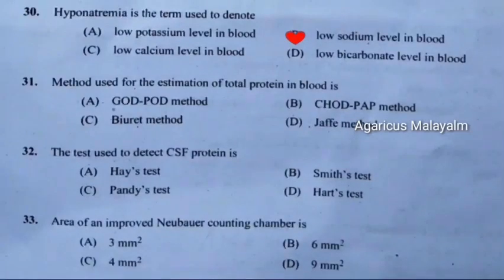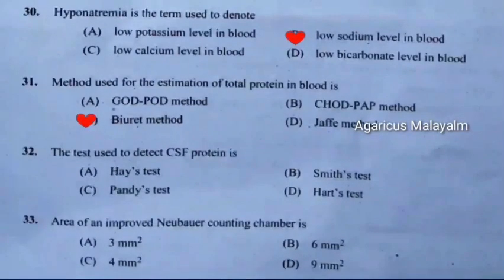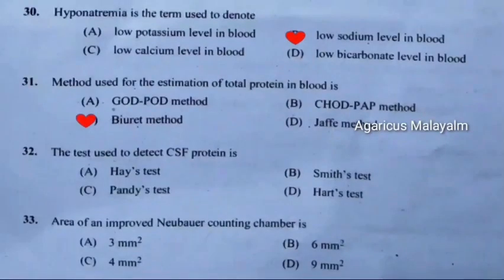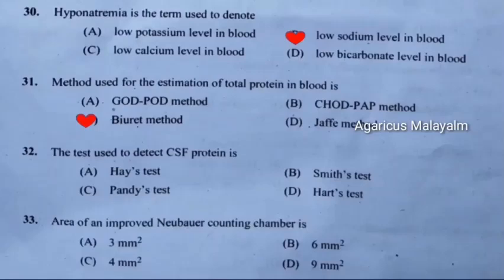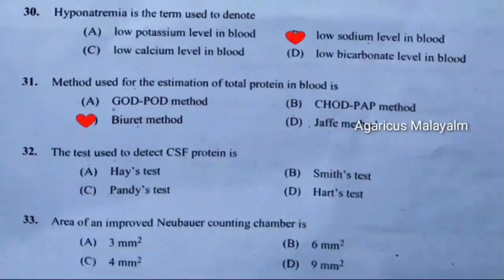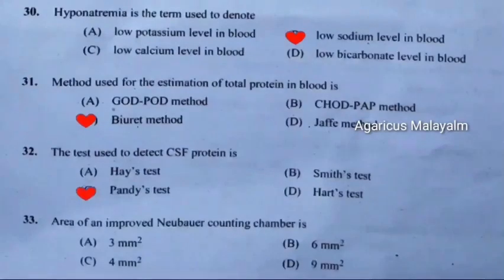Question 30: Hyponatremia is the term used to denote — correct answer is option B, low sodium level in blood. Question 31: Method used for the estimation of total protein in blood — correct answer is option C, biuret method. Question 32: The test used to detect CSF protein is — correct answer is Pandy's test.